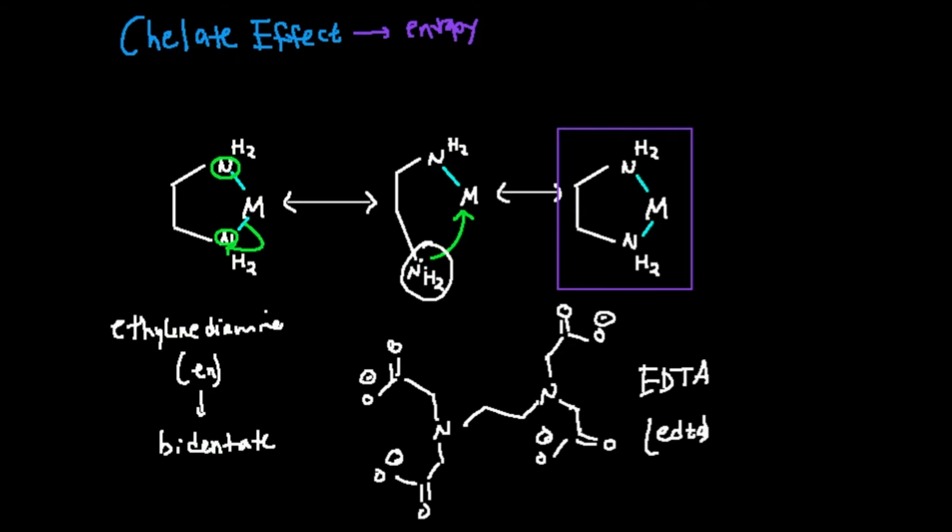Even just these two atoms right here is a drastic increase in stability over two separate monodentate ligands. This one down here, EDTA, ethylenediamine tetraacetic acid, has four donor atoms that could potentially bind to the same metal ion. That's even a greater increase in stability than you see in ethylenediamine.